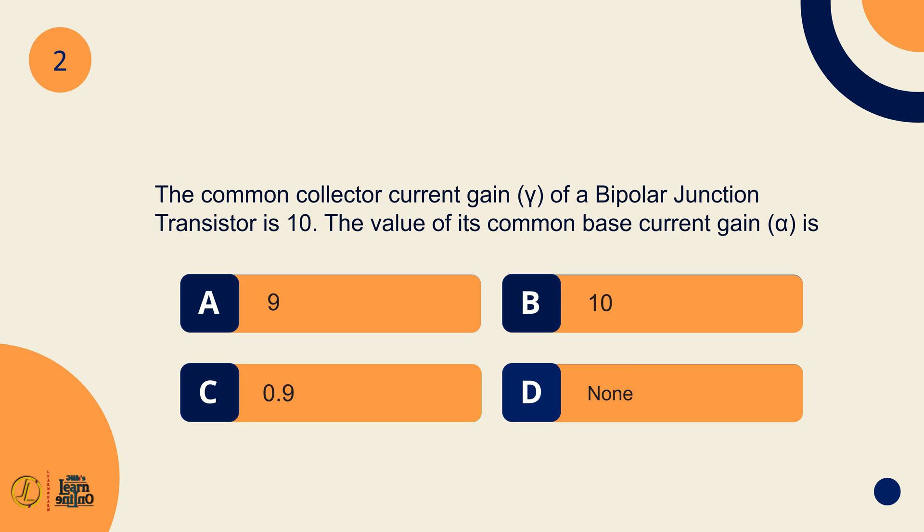The common collector current gain of a bipolar junction transistor is 10. The value of its common base current gain is 0.9.